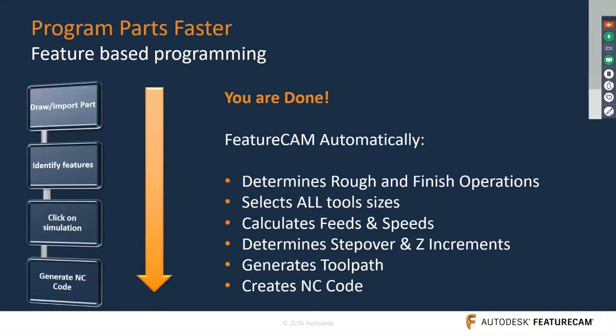FeatureCAM speeds up programming through its unique functionality called automatic feature recognition. It determines rough and finish operations, selects all tool sizes, and calculates feeds. If you select the stock material, feeds and speeds are automatically updated — a very powerful feature of FeatureCAM.